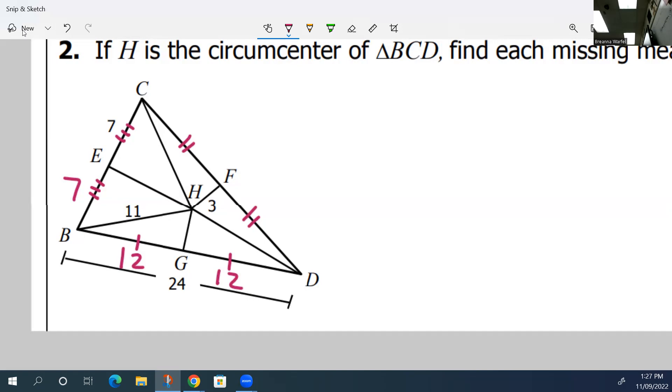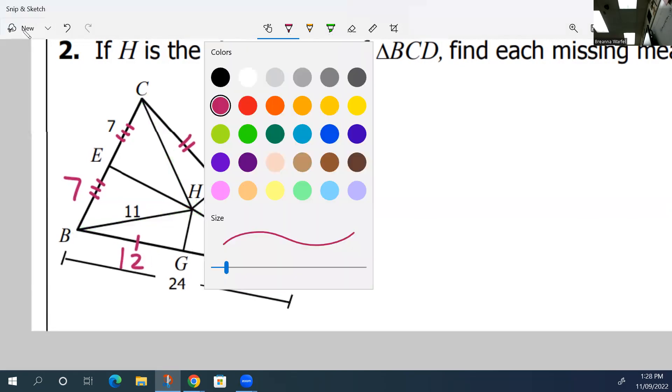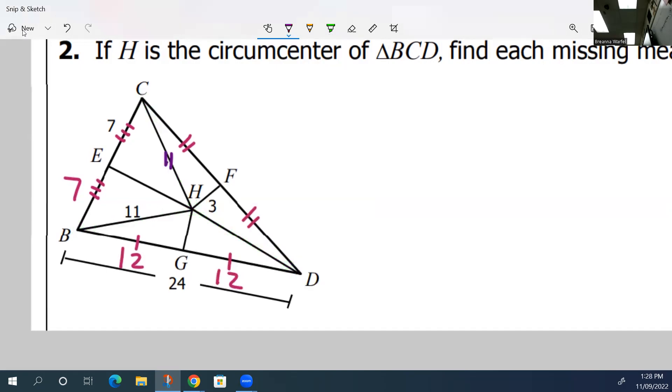We do know that H is the circumcenter. And so to each vertices B, C, and D, those measurements are all congruent. So that means that if this one is 11, that means this one is 11, and that means this one is 11. We know that all of these are right angles.